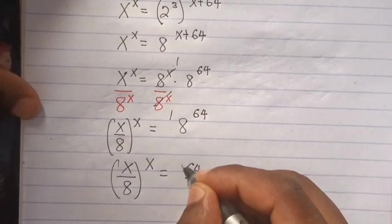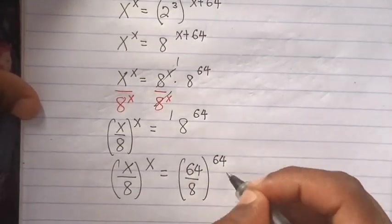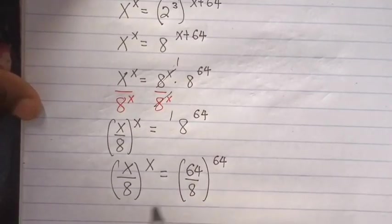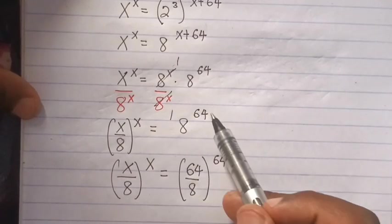The same as you divide 64 divide by 8 bracket, this 64 it remains the same. When we see like this, this 8 is same as 64 divide by 8.